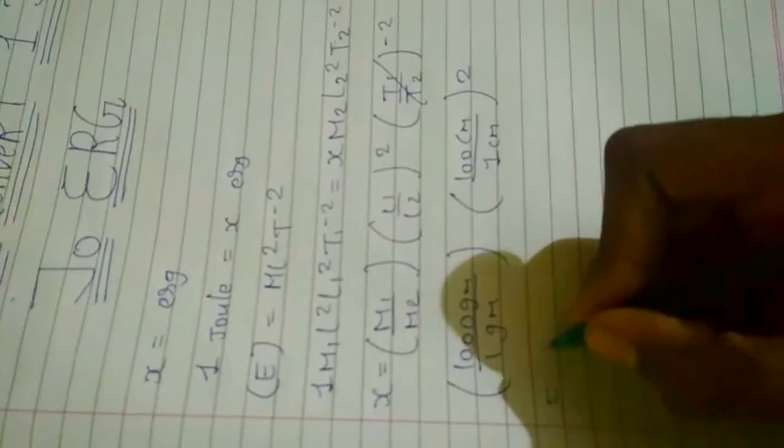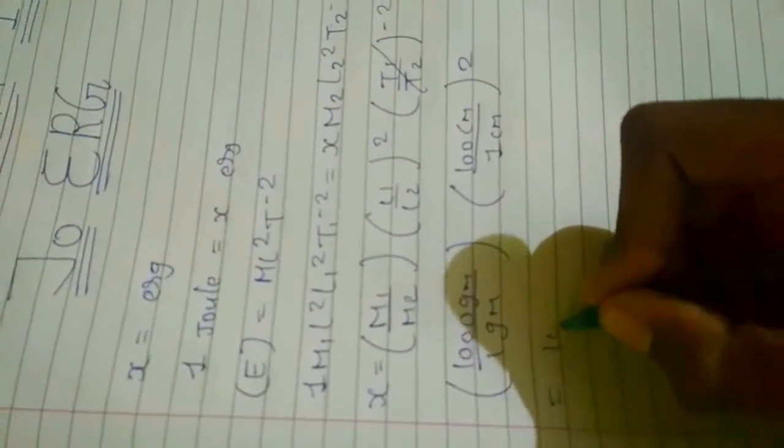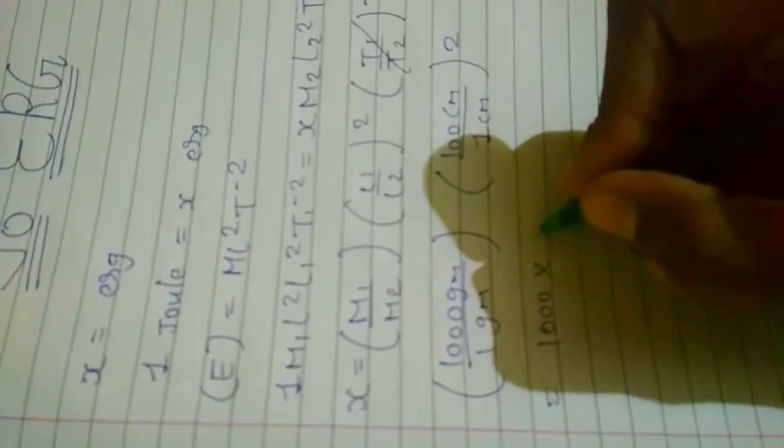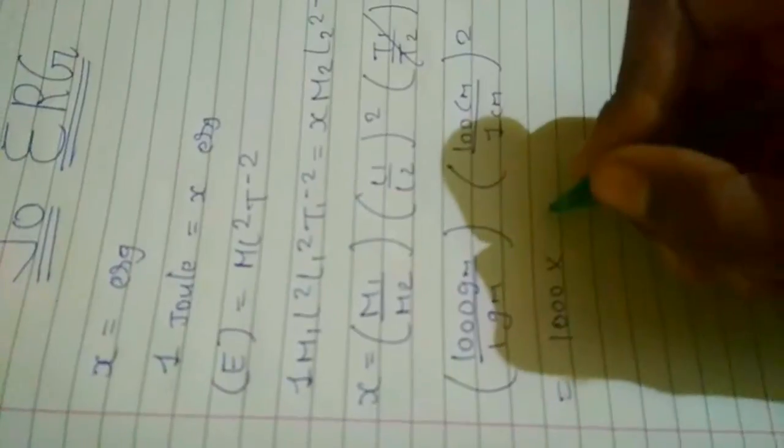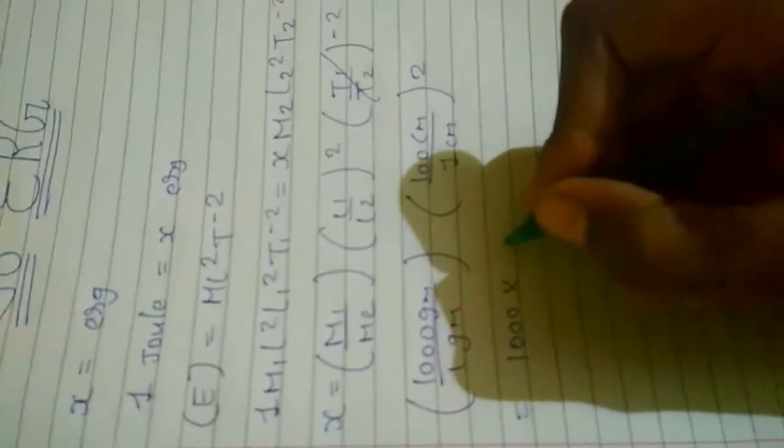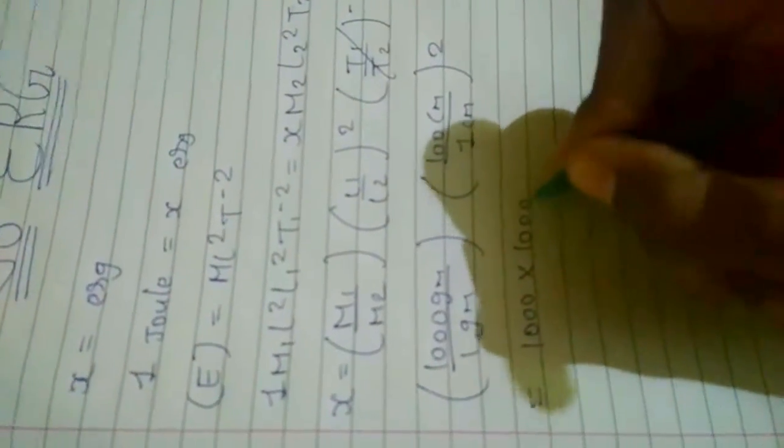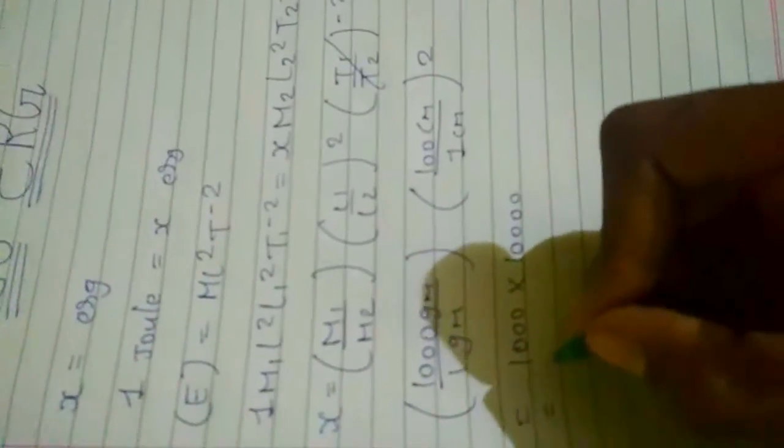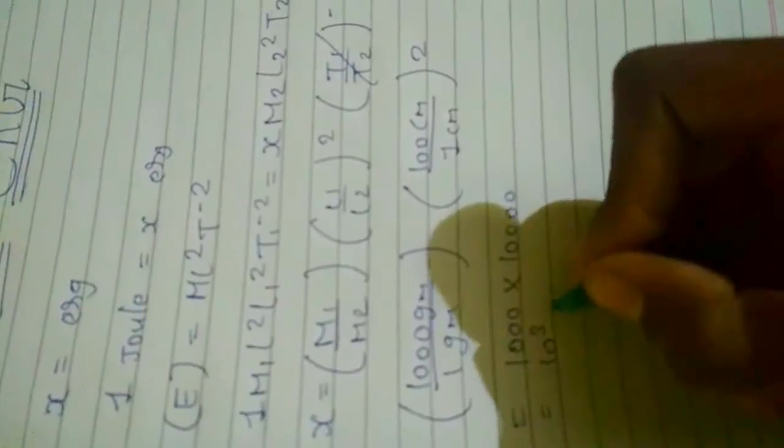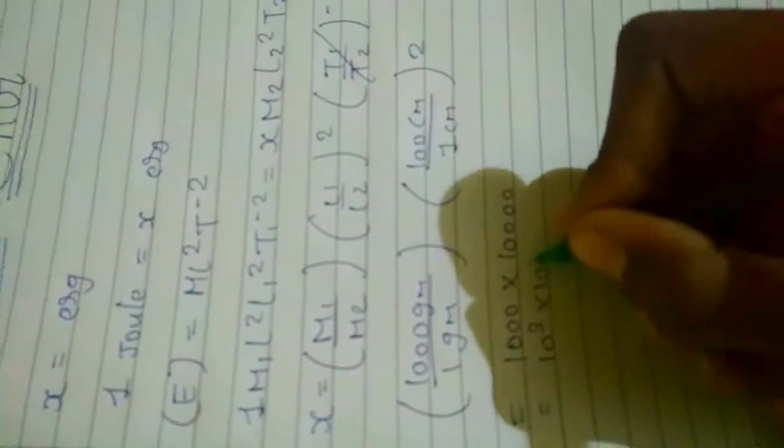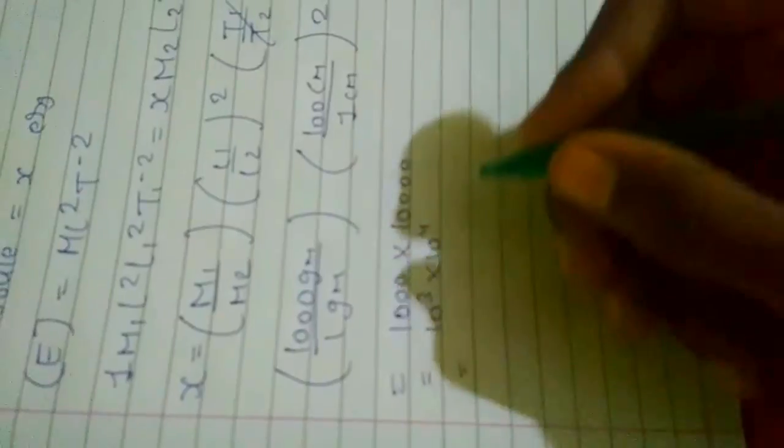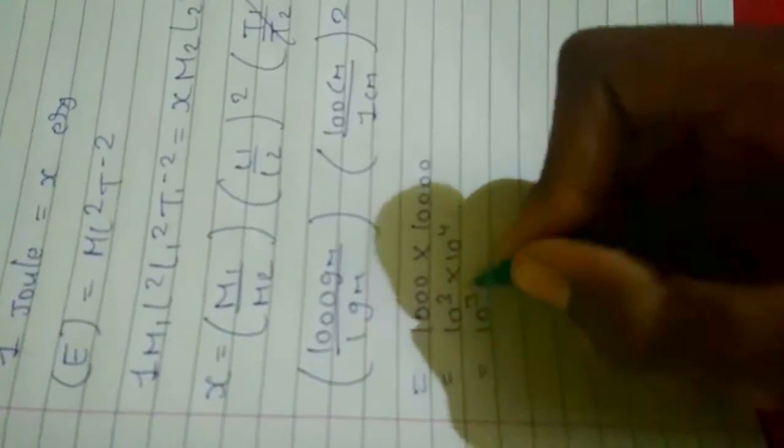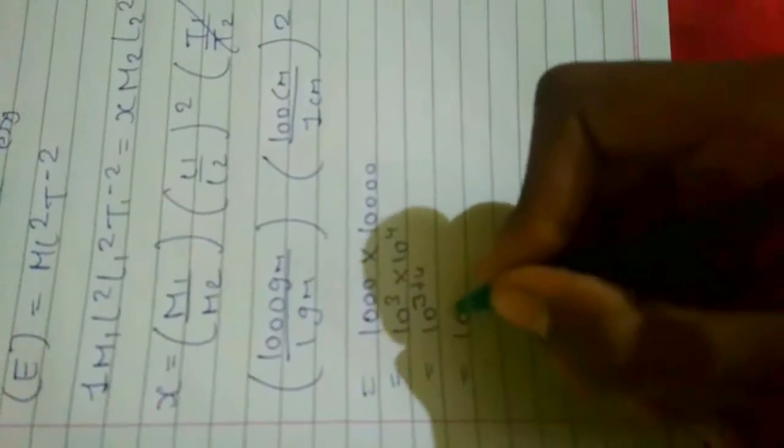Thousand, it will be ten thousand, it will be equal to ten raised to the power three into ten raised to the power four. So this will be ten raised to the power three plus four equals ten raised to the power seven.